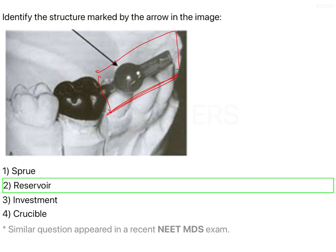The reservoir is a very significant part of the sprue former. When molten alloy is being supplied, it has to take the entire shape of your wax pattern — the alloy should flow to all the nooks and corners of the pattern. Only then will the casting obtained be accurate. If there is no reservoir, the molten alloy will flow but will reach a point after which it either solidifies or fails to reach the entire space left by the wax pattern.